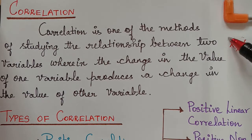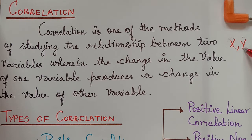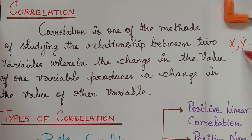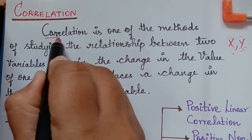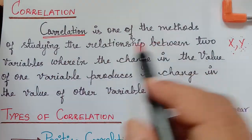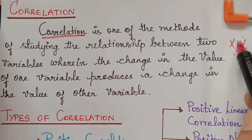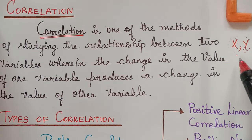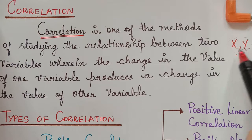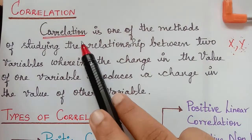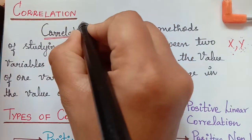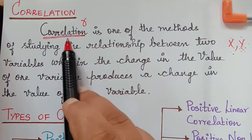So when the change in one variable produces a change in the other variable, the way of evaluating how far these variables are related to one another — to what extent they are related — the concept used is known as correlation. Correlation is unit-free because we are just evaluating the degree of relationship between two variables. Correlation is represented by the alphabet small r.